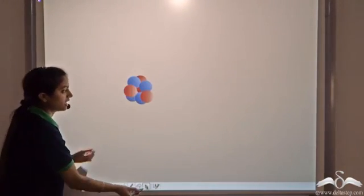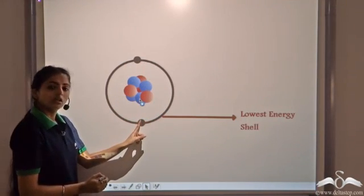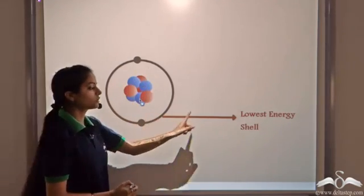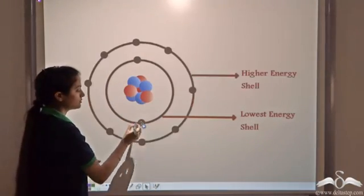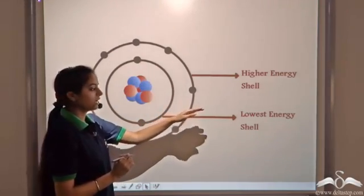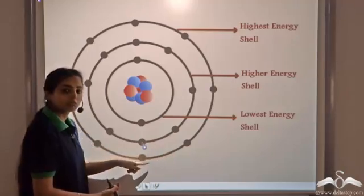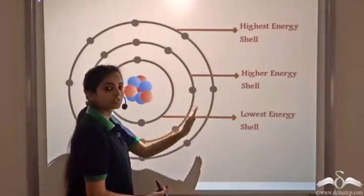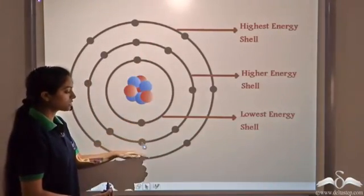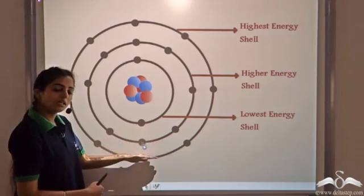As we add electrons, they first occupy the first shell, the K shell. According to Bohr, the energy of the shells is related to their size. The first shell is smallest, so it has the lowest energy. When this shell is filled, electrons then occupy the second shell, the L shell, which has more energy than the first. When that is filled, electrons go to the M shell, which has the highest energy of these three. As shell size increases, energy increases. So electrons fill shells stepwise: K first, then L, then M, N, and so on.